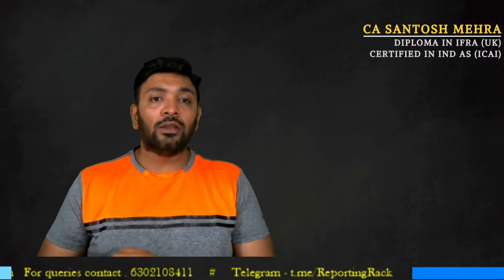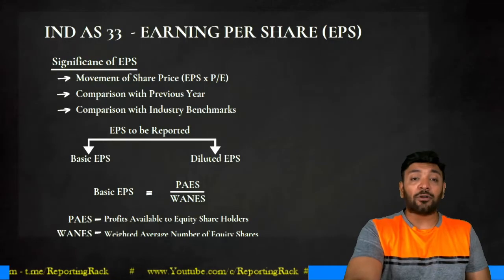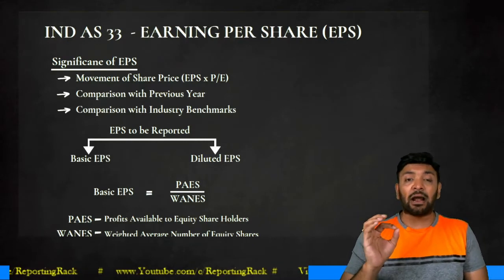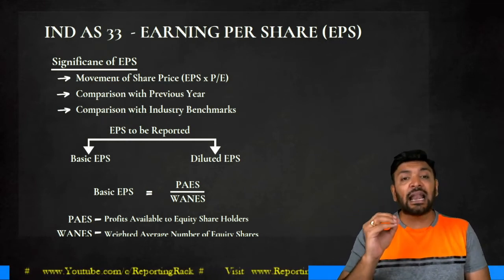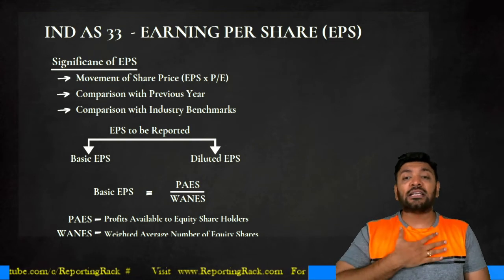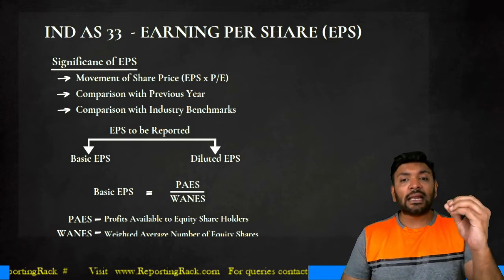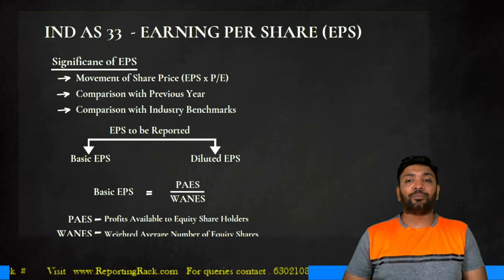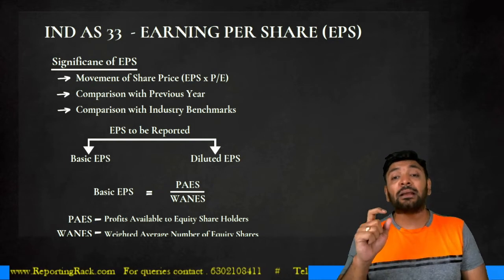When presenting EPS on the face of the P&L, we should also know how to measure it. Basic EPS is determined using the formula: profits available to equity shareholders divided by weighted average number of equity shares. The objective is to communicate to the user how much value is earned per share, which enables year-on-year comparison.